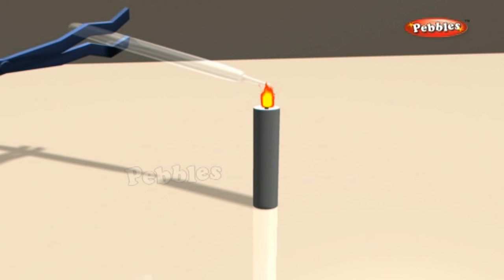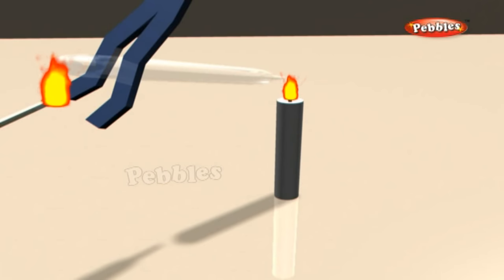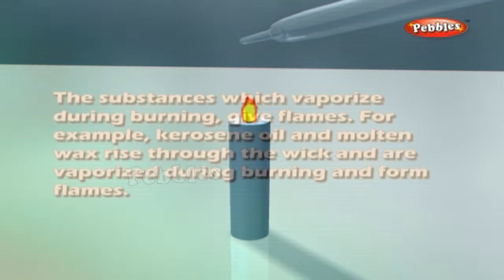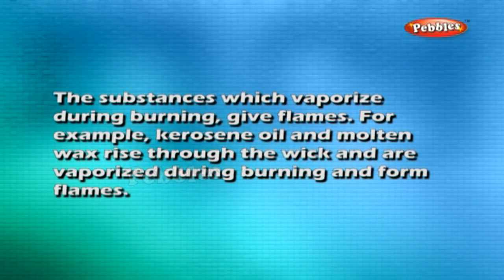Structure of a flame: light a candle, hold a glass tube with a pair of tongs, and introduce one end into the dark zone of a non-flickering candle flame. Bring a lighted matchstick near the other end of the glass tube — you will see a flame. Notice that the wax near the heated wick melts quickly. The substances which vaporize during burning give flames. For example, kerosene oil and molten wax rise through the wick and are vaporized during burning to form flames.